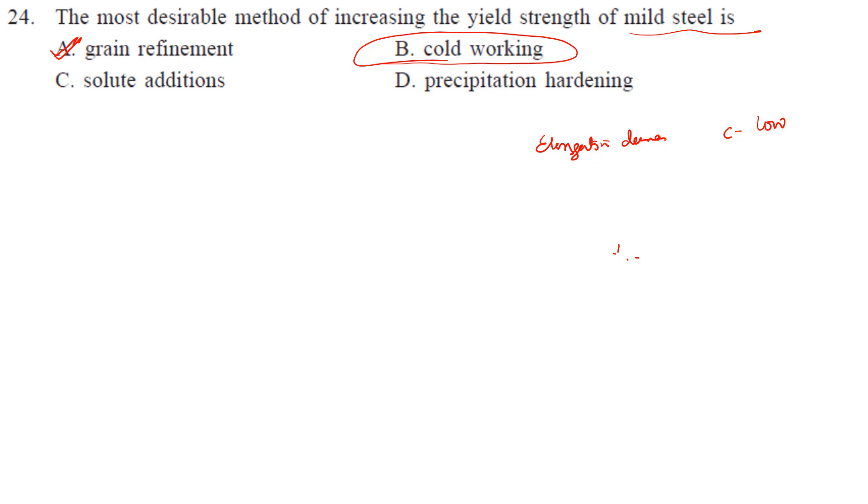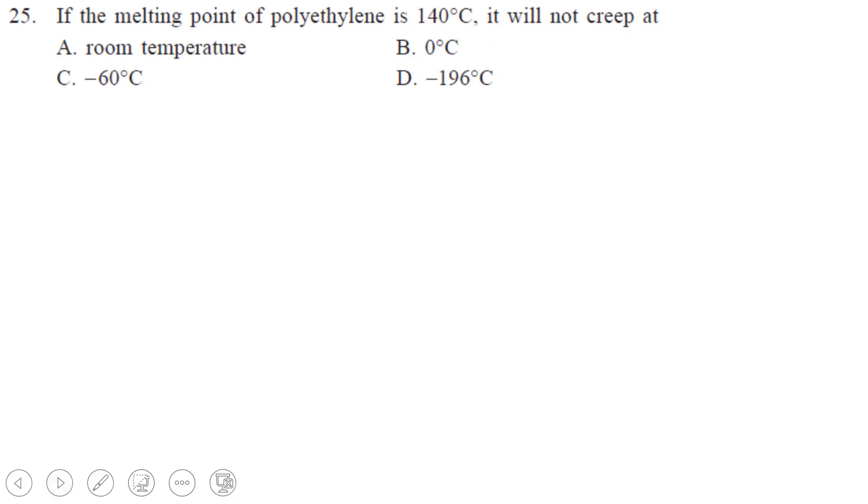Always grain refinement process is very good and very much preferred. Next, if the melting point of polyethylene is 140 degrees, it will not creep at what temperature? Creep temperature is roughly greater than or equal to 0.4 times the melting point.